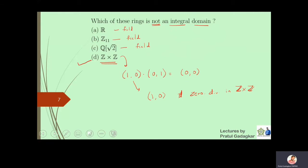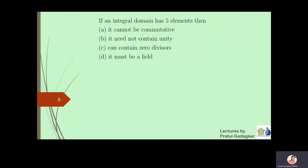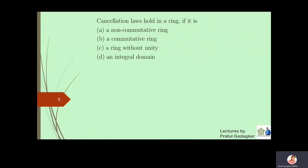The next question is: if an integral domain has five elements, what can you say about it? We know that every finite integral domain must be a field. The option that it cannot be commutative is wrong because integral domains are commutative. An integral domain must contain a unity and cannot contain zero divisors. These three other options are wrong, so we conclude it must be a field.